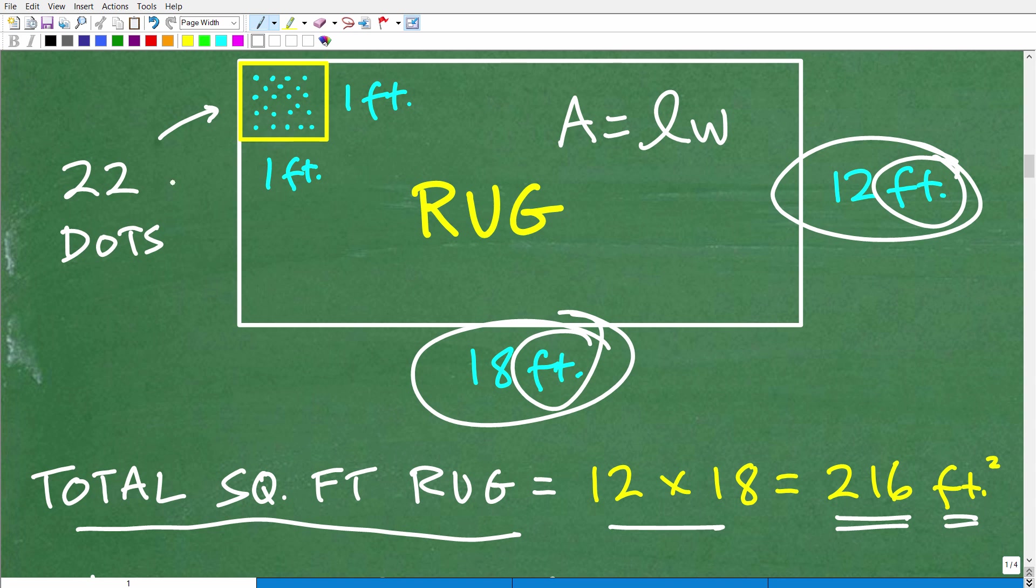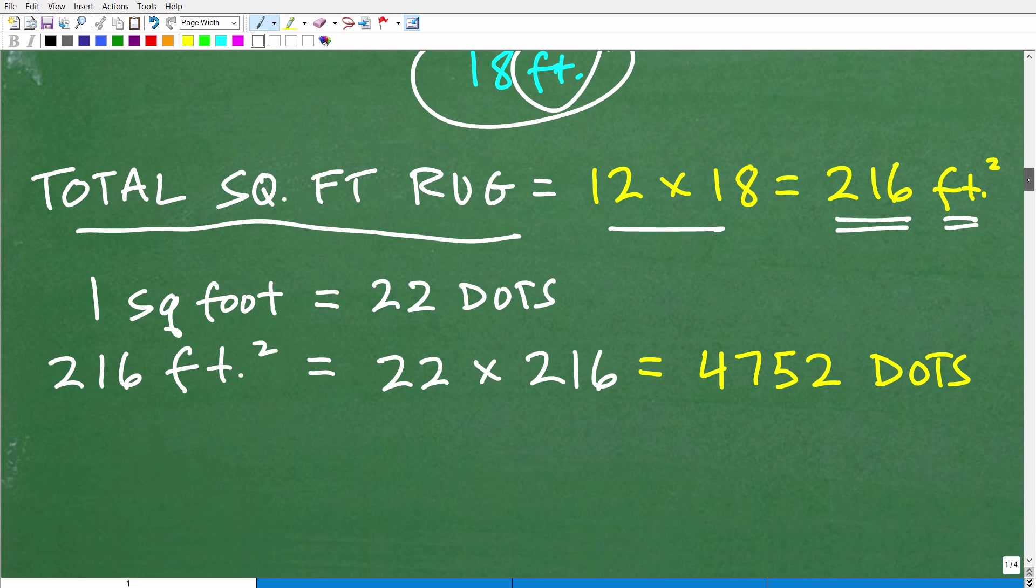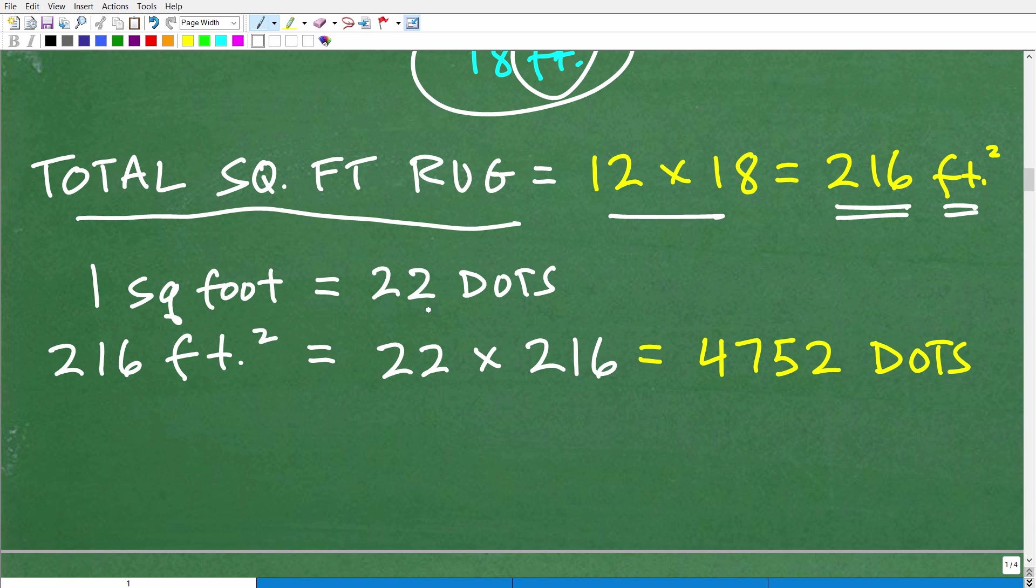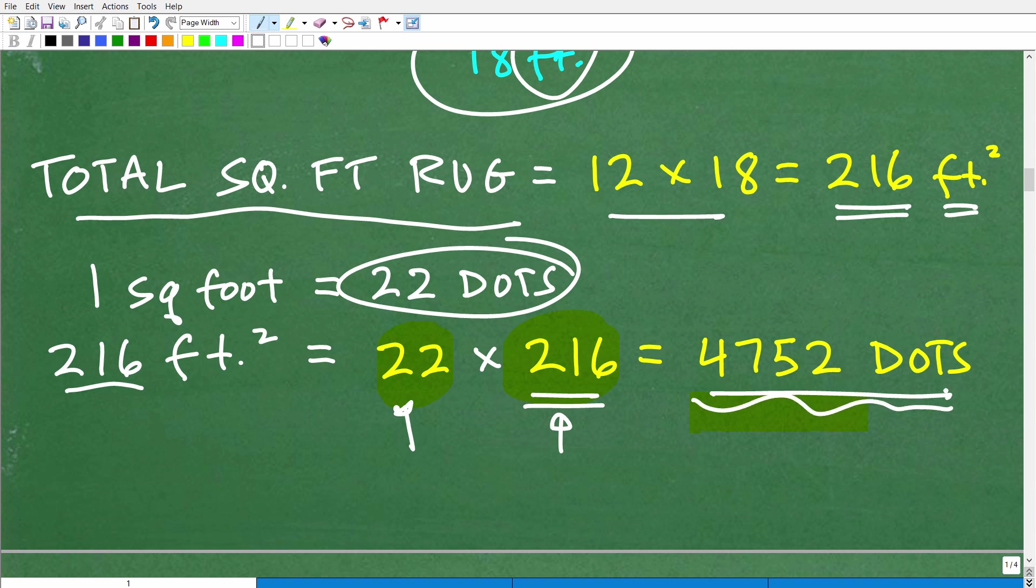To figure out the total square feet of this rug, we simply need to multiply the length times the width. So the area of a rug is length times the width. So it would just be this side times this side. So 12 times 18, or 18 times 12, is going to be 216. But 216, what? Well, it's feet times feet, or feet squared. So this entire rug has 216 square feet. All right. Now, if we know one square foot has 22 dots, and we have 216 square feet, well, how many dots do we have in this entire rug? Well, pretty easy. So again, one square foot has 22 dots. We have 216 square feet. So all we need to do is multiply 22 by that 216, and we end up with 4,752 dots, because that's how many square feet we have. We have 216 square feet. For every square foot, there's going to be 22 dots, which is 22 times how many square feet we have, and that's how we get our final answer.